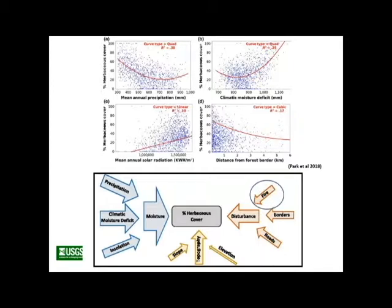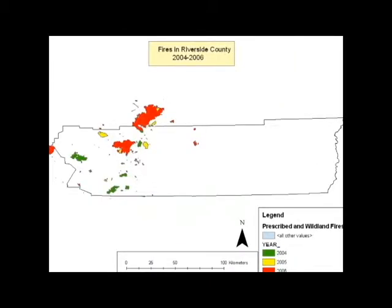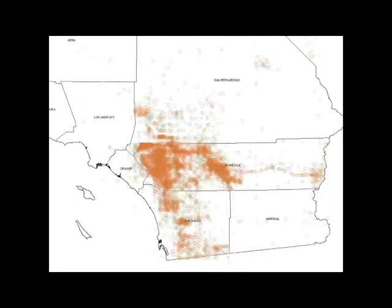A problem arises when making inferences based on landscape fire history: we don't have a fire history map that allows precise determination of fire history at a single 30-meter pixel. The FRAP fire history database is useful for many things but may not accurately capture fire history at individual sites. For example, looking at riverside county over a three-year period, the FRAP database captured only a fraction of fires — many sites that burned are not captured if fires were small.